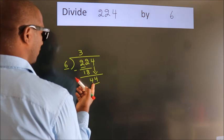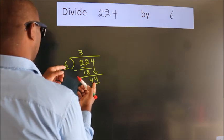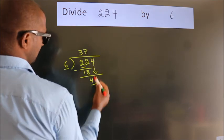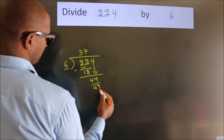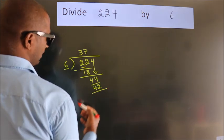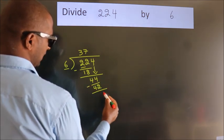A number close to 44 in the 6 table is 6 sevens, 42. Now we subtract. We get 2.